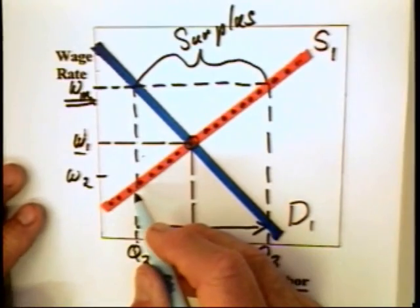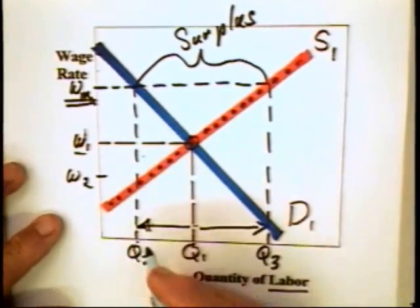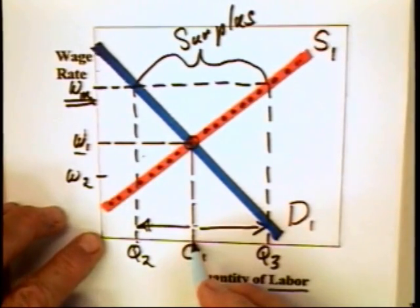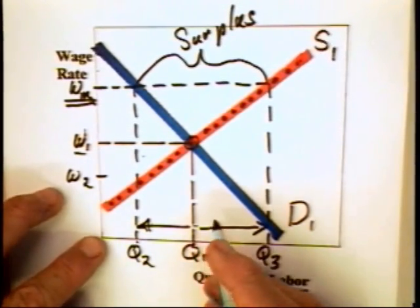The workers who have the jobs after the minimum wage is imposed may be a different set of workers than the workers who were being employed at W1.